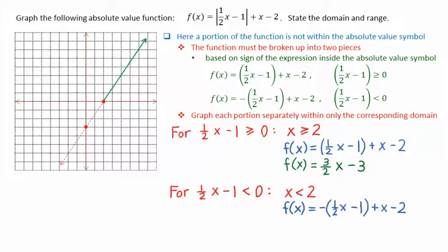In this case, f of x is equal to negative 1 half x minus 1 plus x minus 2. Again, we simplify this. The negative 1 half x plus x gives 1 half x, and negative of negative 1 gives positive 1, and then subtracting 2, we get negative 1, giving us f of x equals 1 half x minus 1.